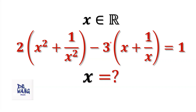Look at this equation. If we want to get rid of the denominator by multiplying both sides by x squared, it will be a fourth degree equation. To solve a fourth degree equation in general is difficult. Here we are going to discuss a different method — we convert this fourth degree equation into a quadratic equation, then solve the quadratic equation to find the value of x.